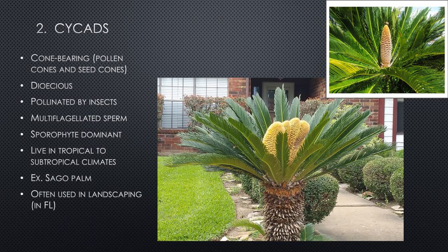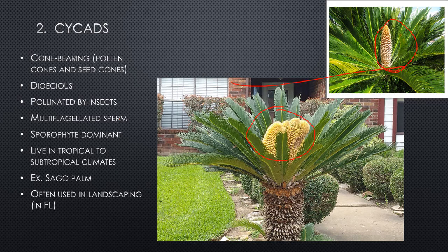The second type of gymnosperm is cycads — still cone-bearing with pollen cones and seed cones, but dioecious with separate male and female plants. They are unique in having multi-flagellated sperm, whereas typically sperm have one flagellum. Cycads are pollinated by insects and live in tropical to subtropical climates — they're used a lot for landscaping in Florida as the sago palm.